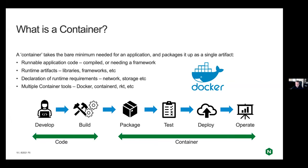This is the foundation for bringing portability to microservices applications, as well as some legacy applications. There's an analogy known as cattle versus pets. In the old way of doing things, we treated our servers like pets — if a mail server goes down, it's all hands on deck. In the new way with microservices, it's more like cattle in a herd. If a service goes down, you just replace it and spin up another container. In Kubernetes, you scale applications horizontally — if a container completes its job, you just destroy it. It's a very dynamic environment.